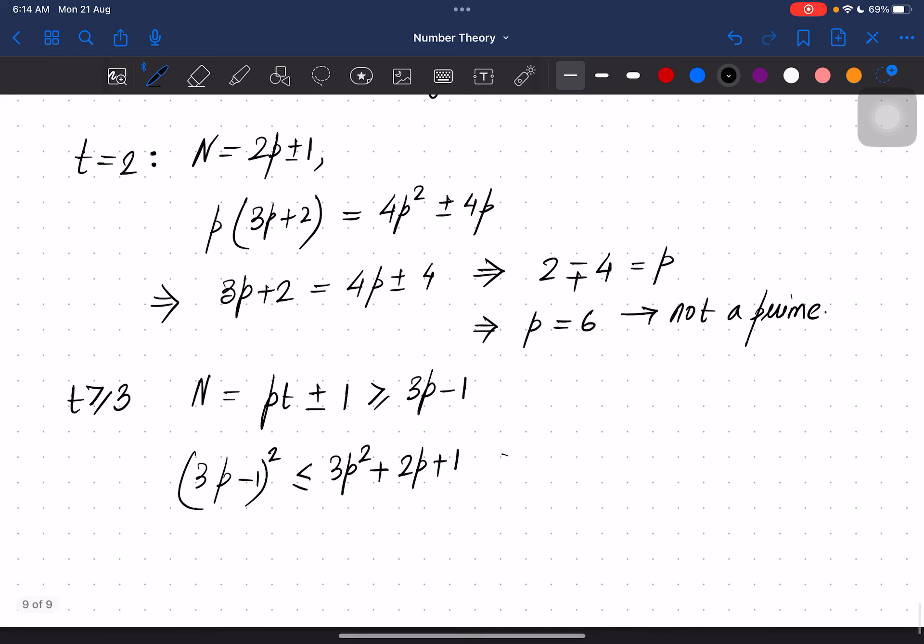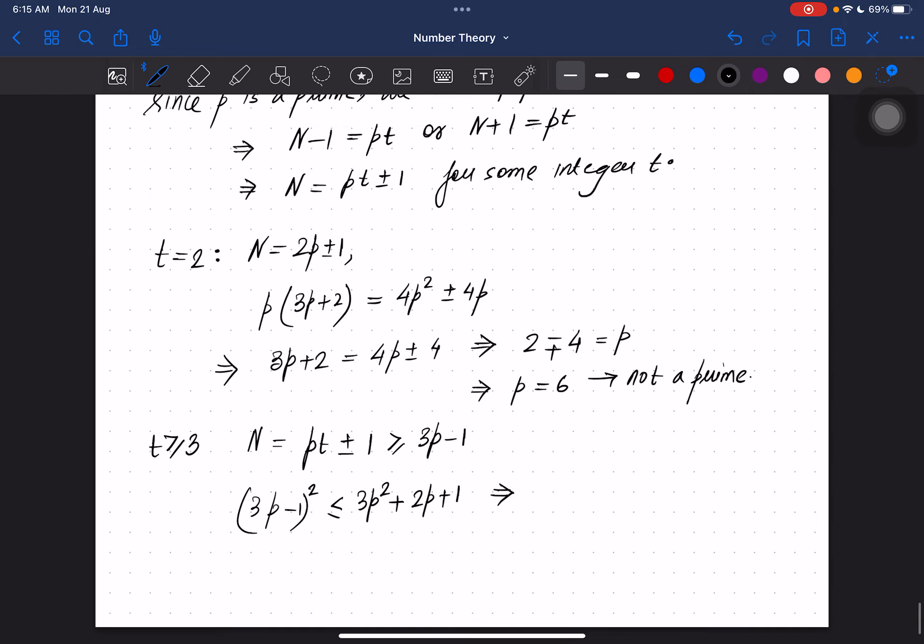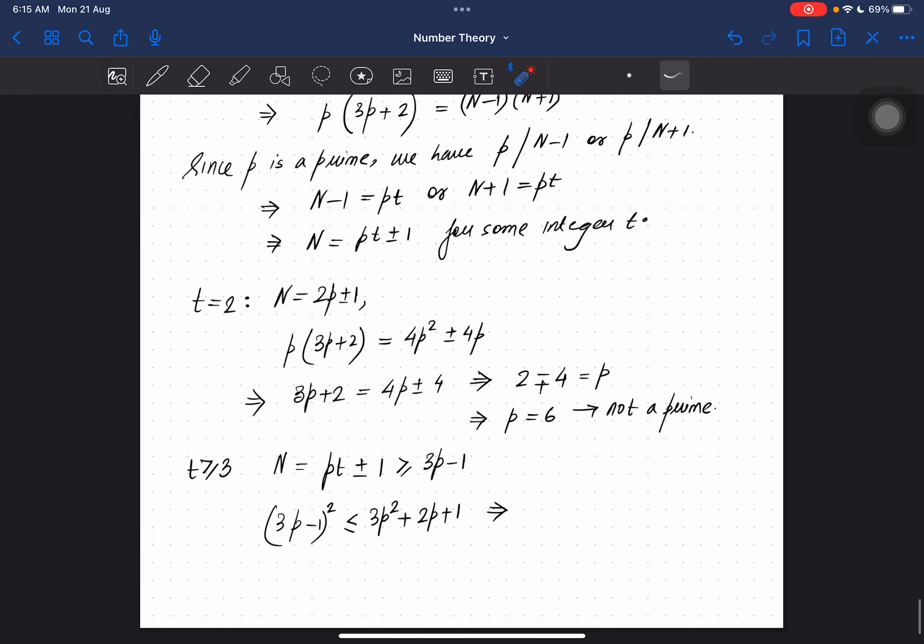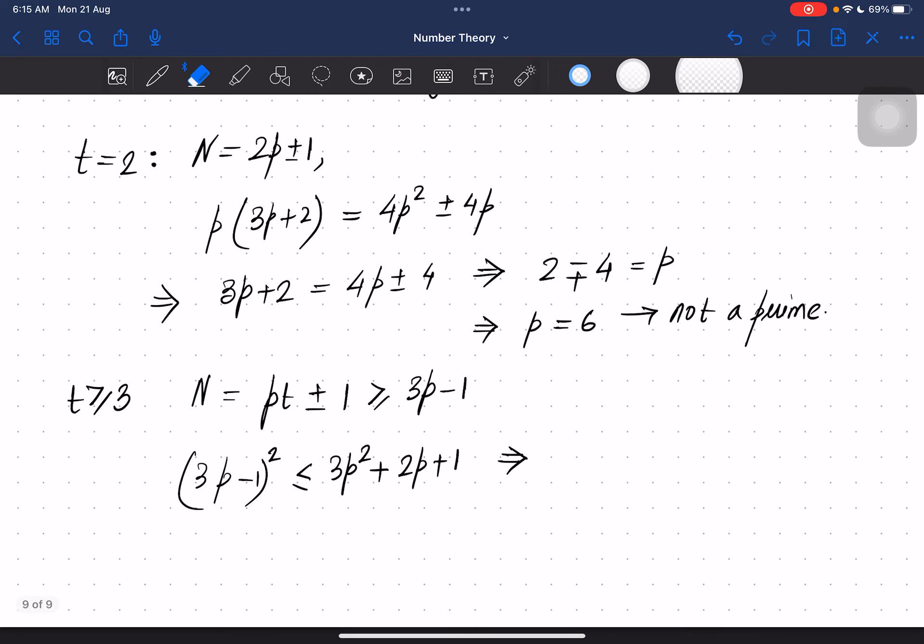If I simplify, we can cancel out terms. If I expand I have 9p² - 6p + 1 is less than or equal to 3p² + 2p + 1. So if I move everything, 6p² - 8p ≤ 0. So p has to be less than or equal to 8/6, which simplifies to 4/3. So there is no solution.